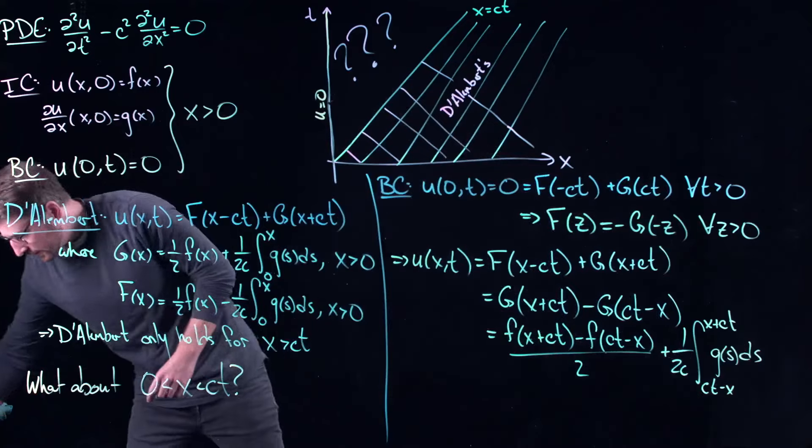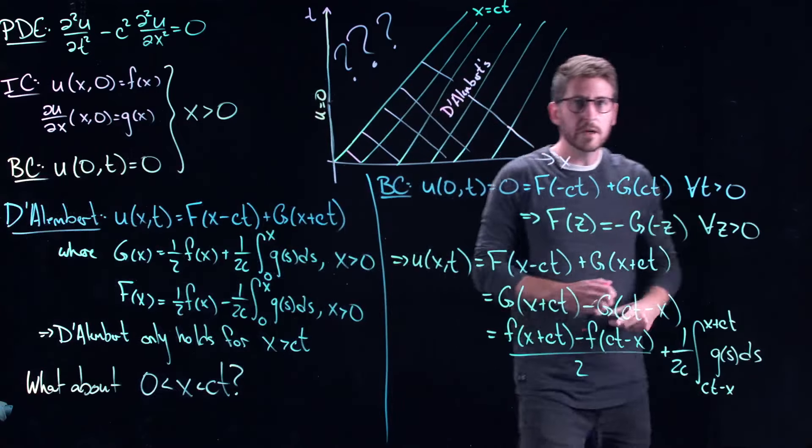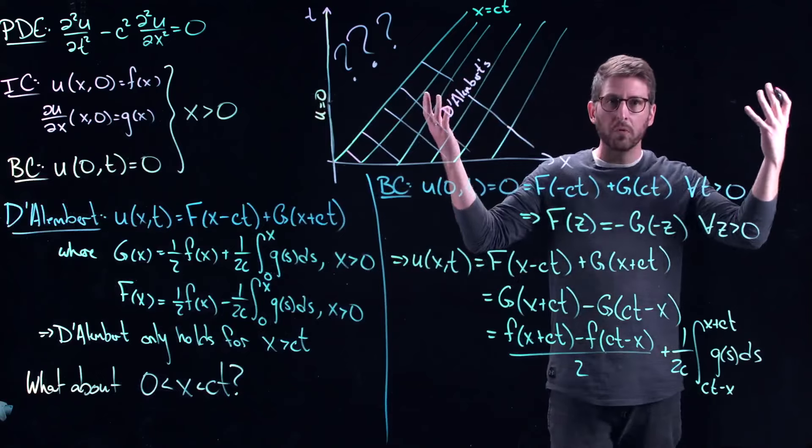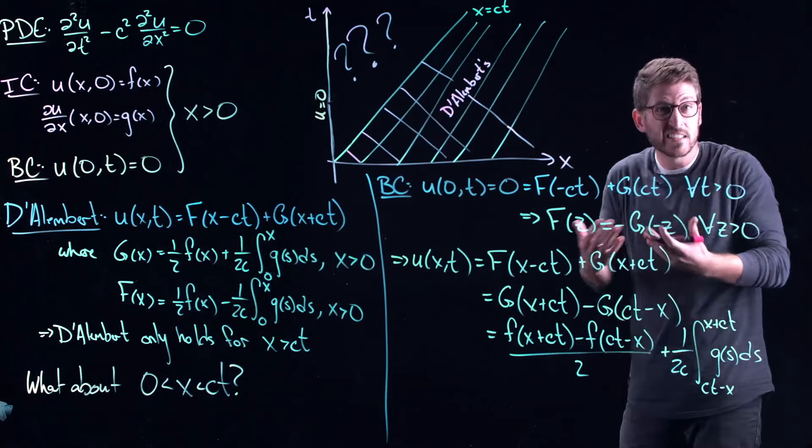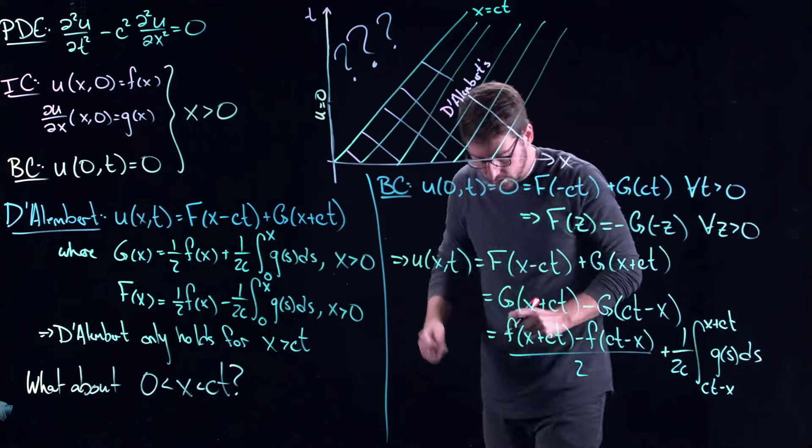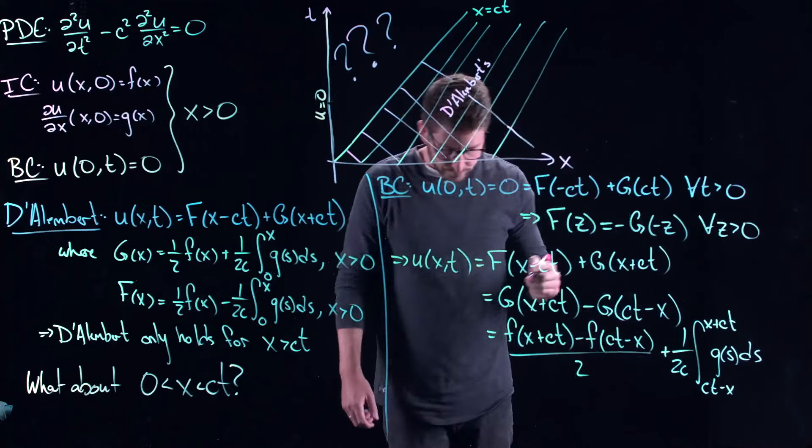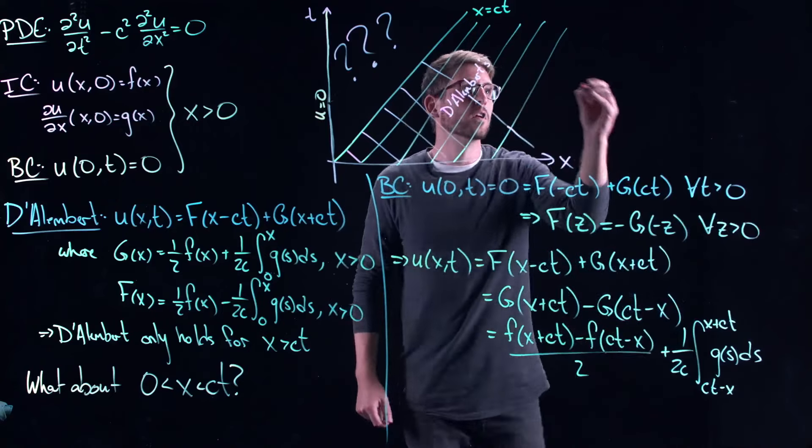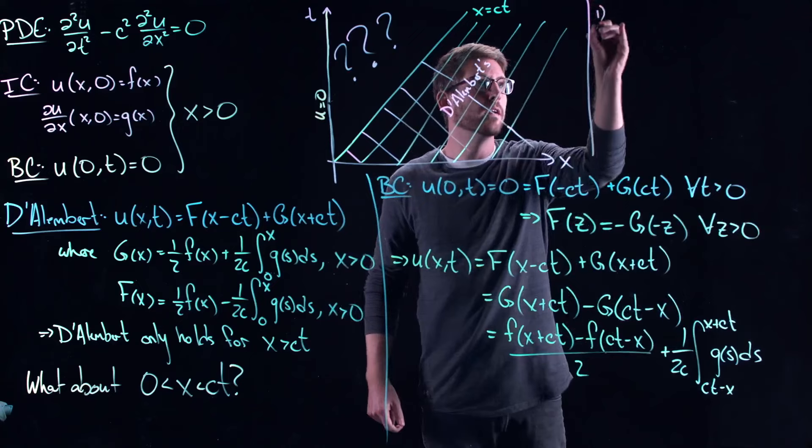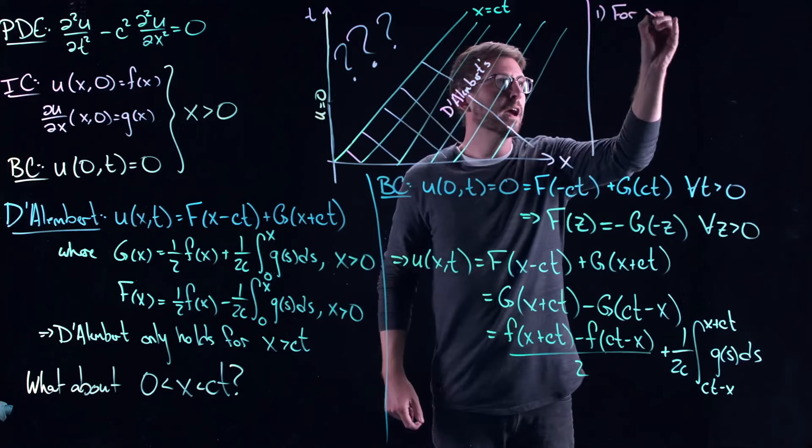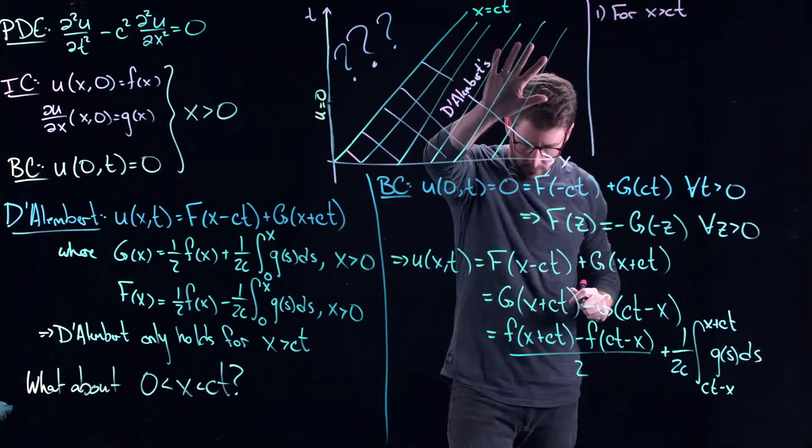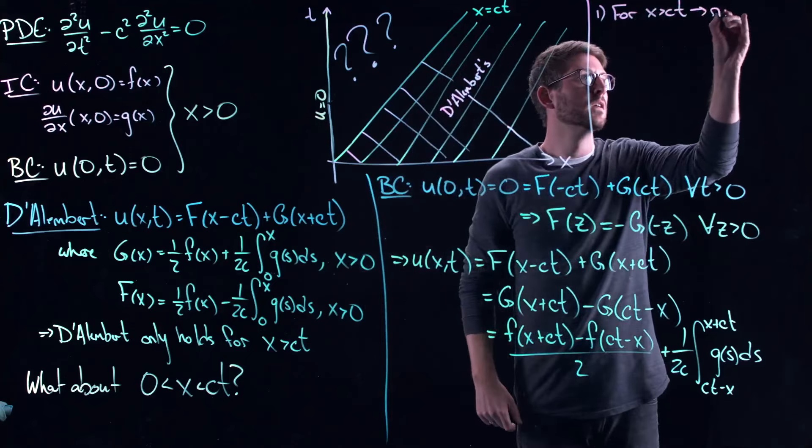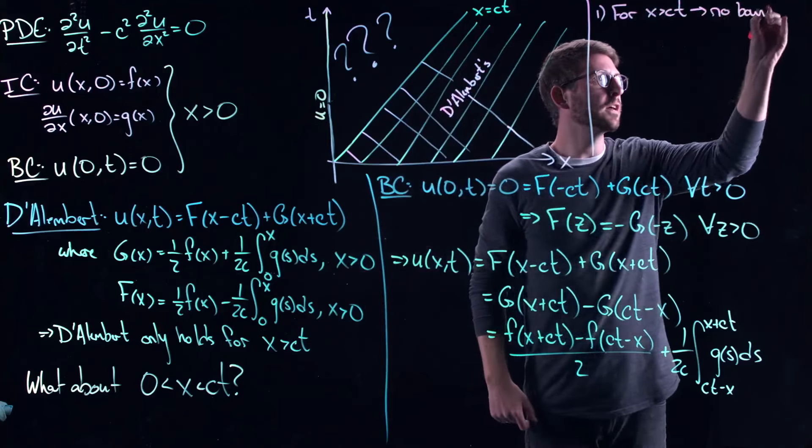So the question is, okay, we have an analytic expression, but what the heck does this say anything of value to us? Does it tell us anything about the equation, about the solutions? Well, here's the thing. So some commentary. One. For x greater than ct, alright, so in this region, there's no boundary effects.